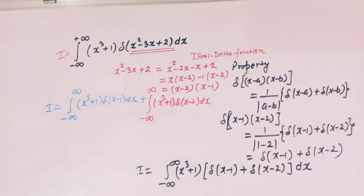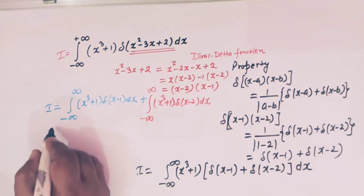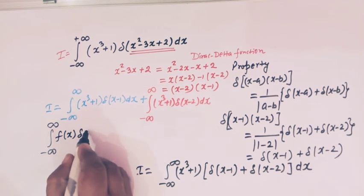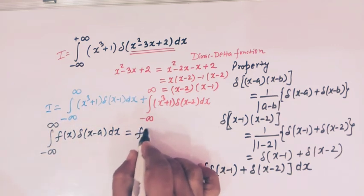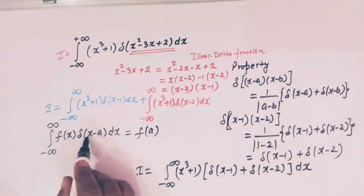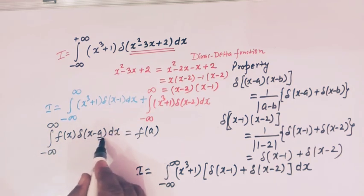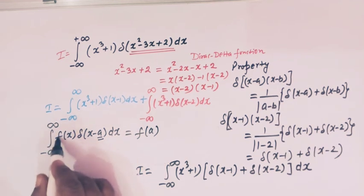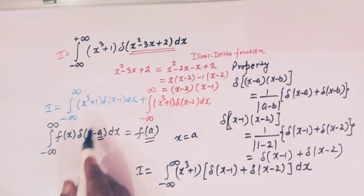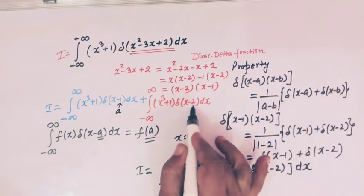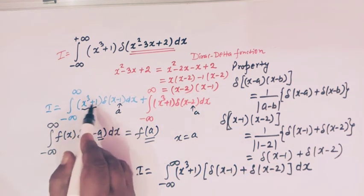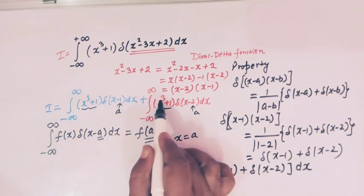At this point we will again make use of one important property of the Dirac delta function, which says that the integral from minus infinity to infinity of f(x) delta(x minus a) dx equals f(a). So we will simply find the value of f(x) at x equal to a. Here the value of a is 1 in the first integral and 2 in the second, and f(x) equals x cubed plus 1 in both cases.